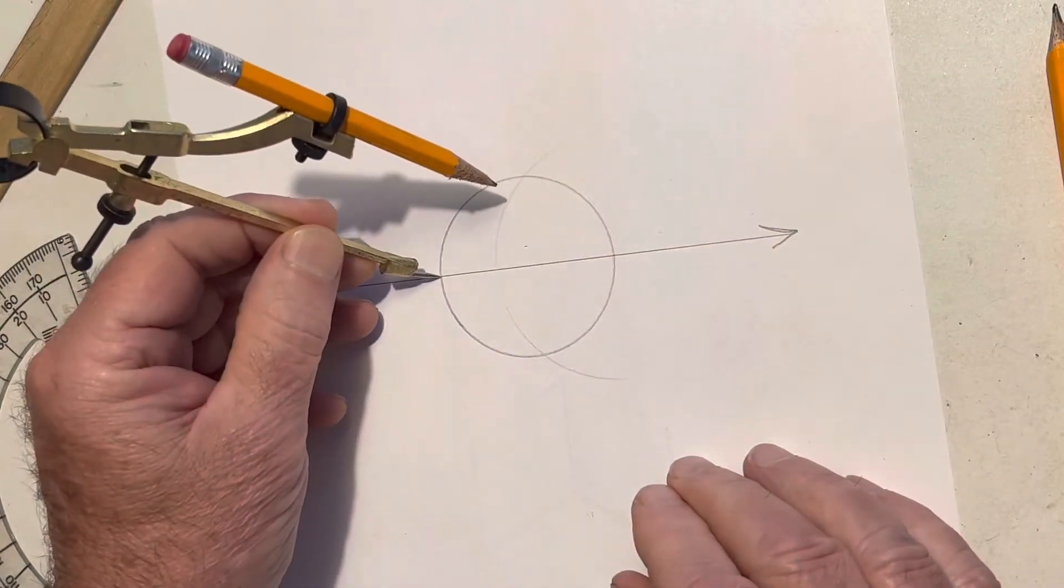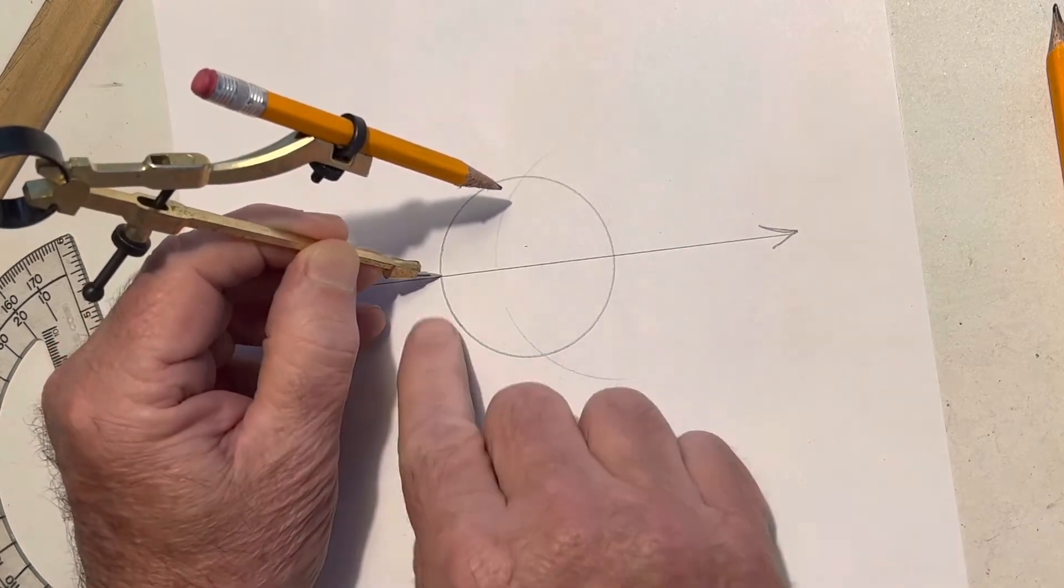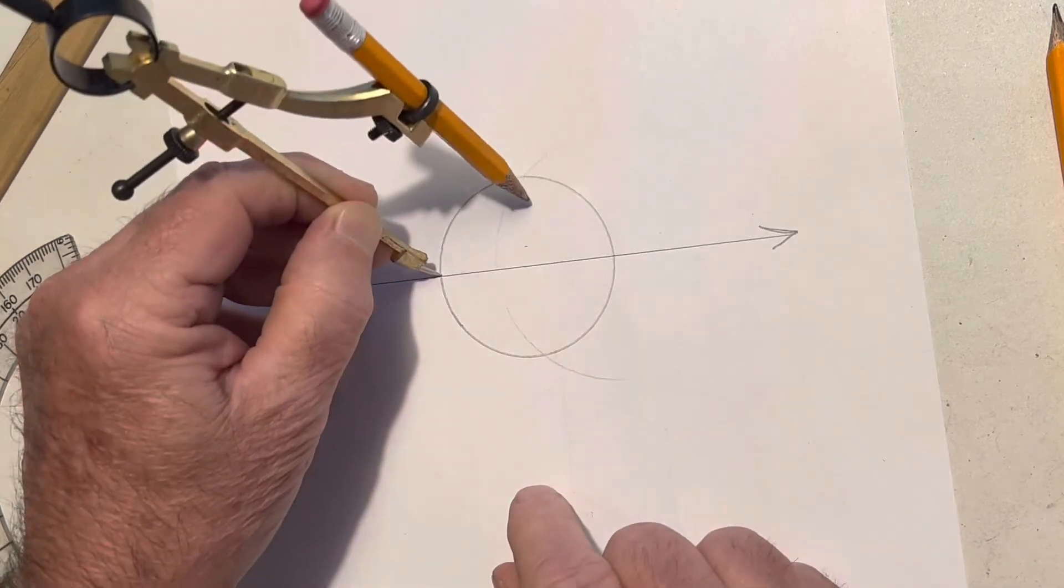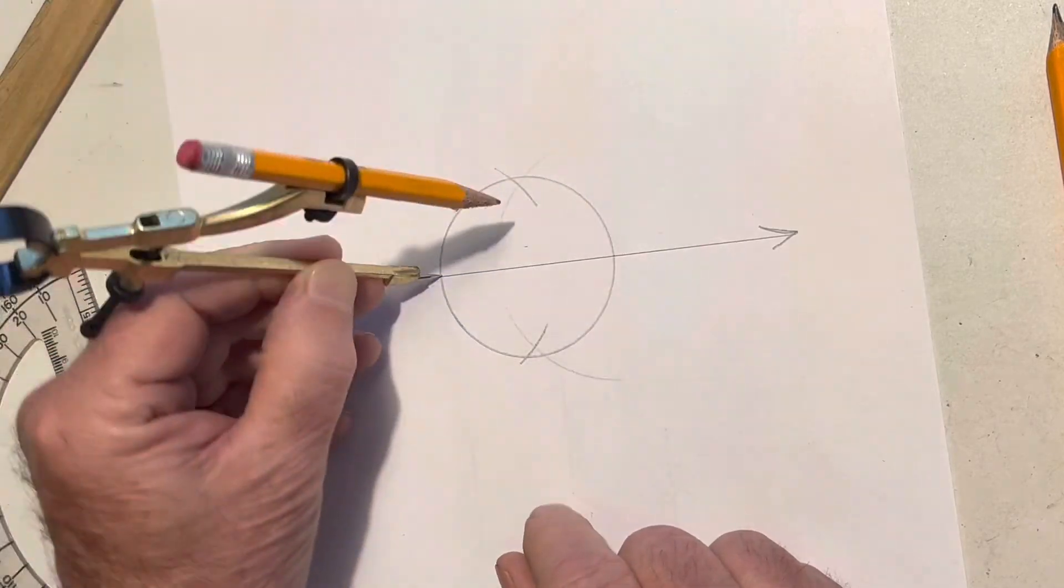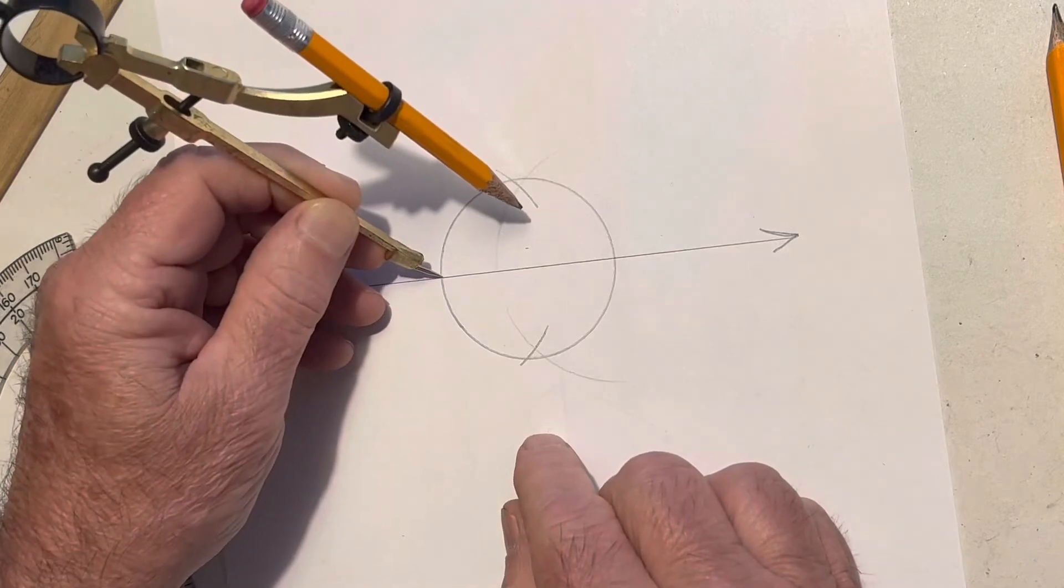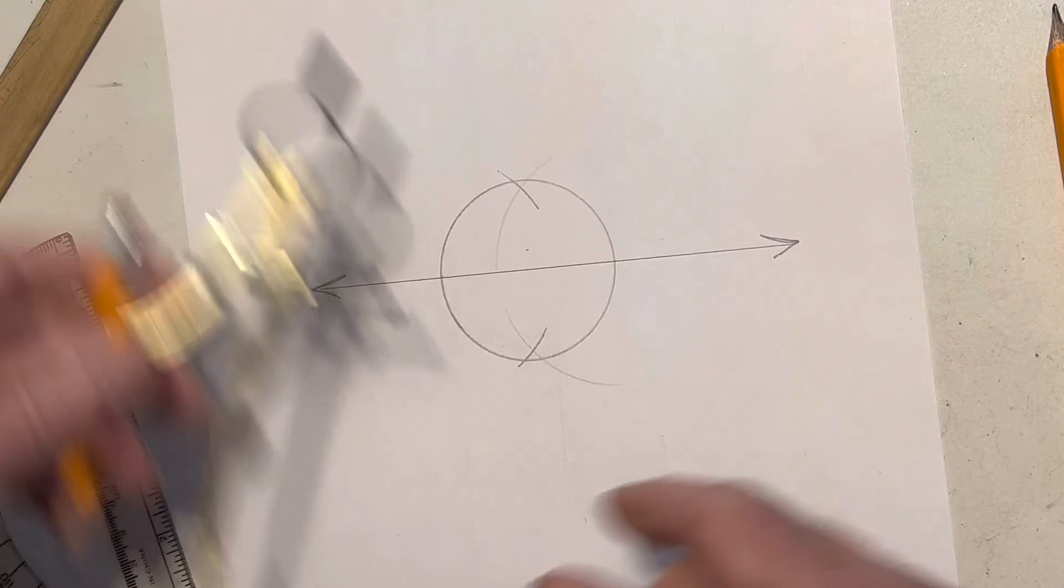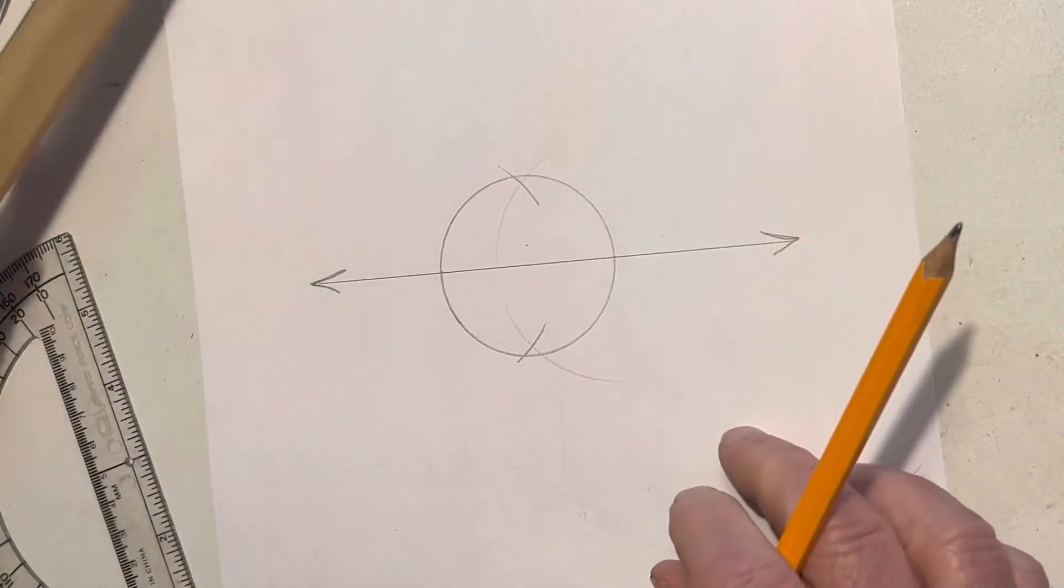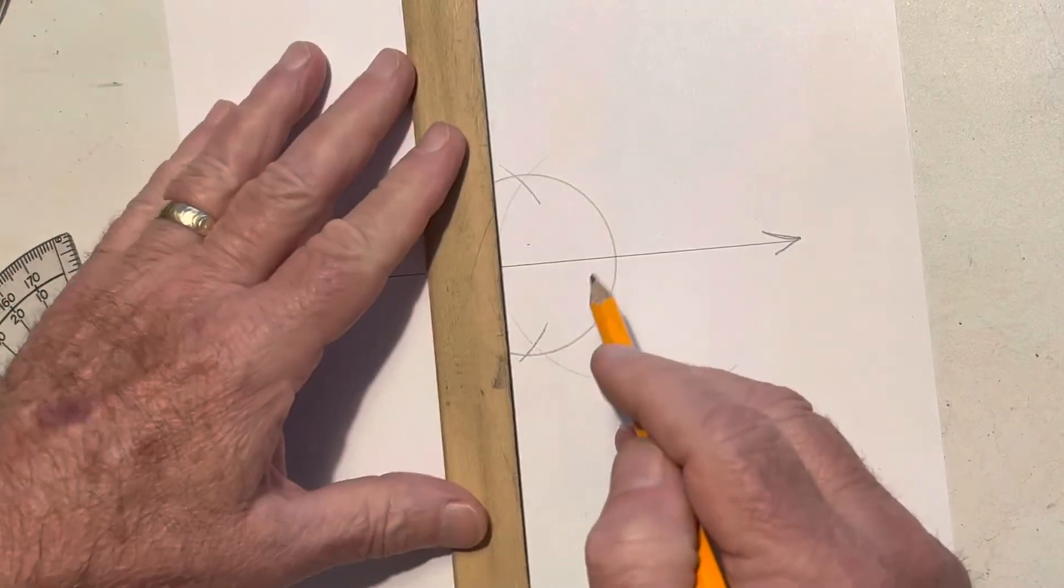I'm going over here on this side. Put my compass point where the line crosses and make that line also. All I've done is just gone past the center. It doesn't matter what the measurement is. Now I've got a point here and a point here.